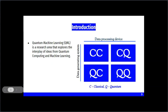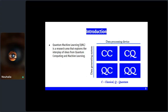We start by introducing quantum machine learning — a research area exploring the interplay between quantum computing and machine learning. Machine learning is the science of making computers learn from data to solve problems instead of being explicitly programmed. Quantum computing describes how information is processed on machines based on the laws of quantum mechanics.